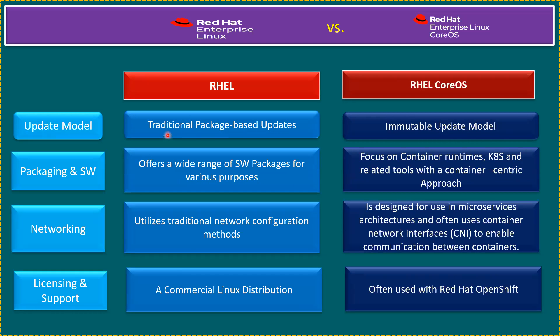Regarding the update model: RHEL uses traditional package-based updates, which may lead to variability in system configuration over time. Normally for RHEL updates, we may use Red Hat Satellite servers. CoreOS uses an immutable update model — it's automatically updated end-to-end, ensuring consistency for containerized environments.